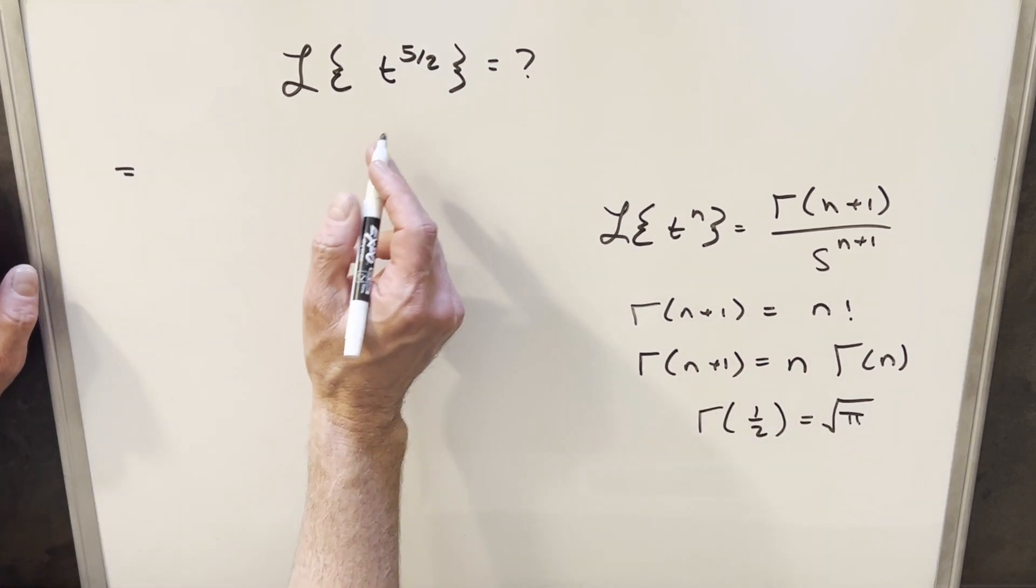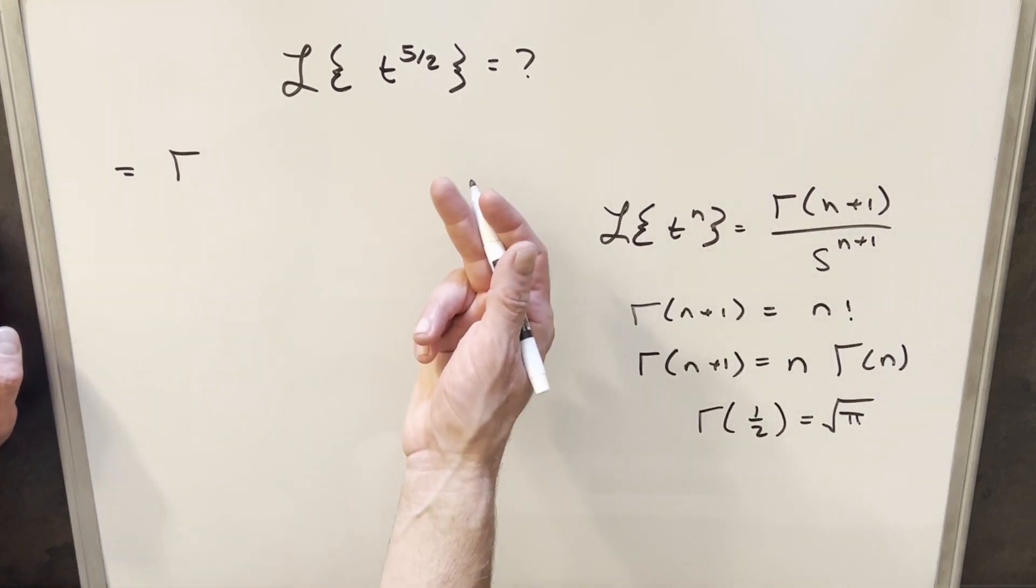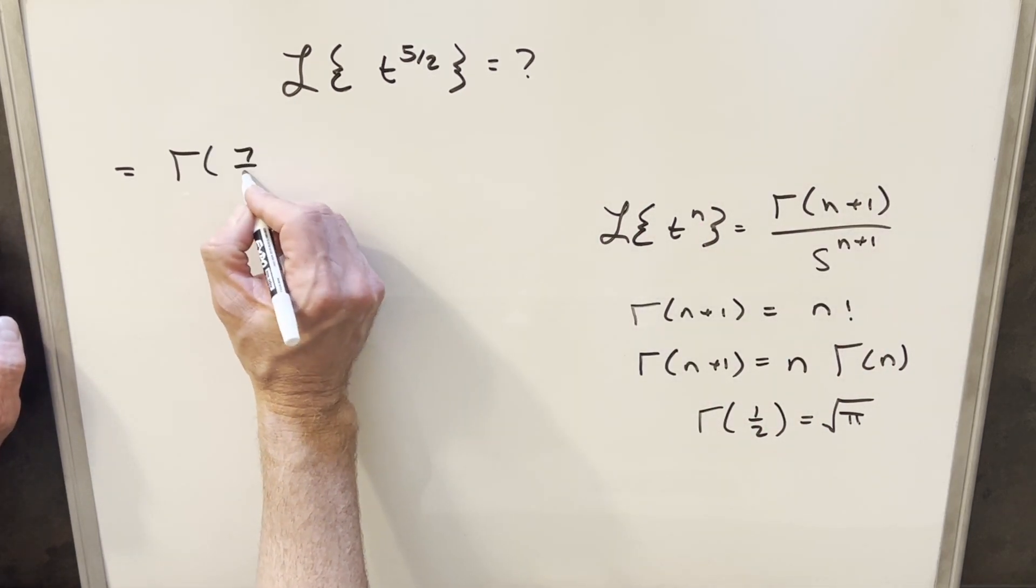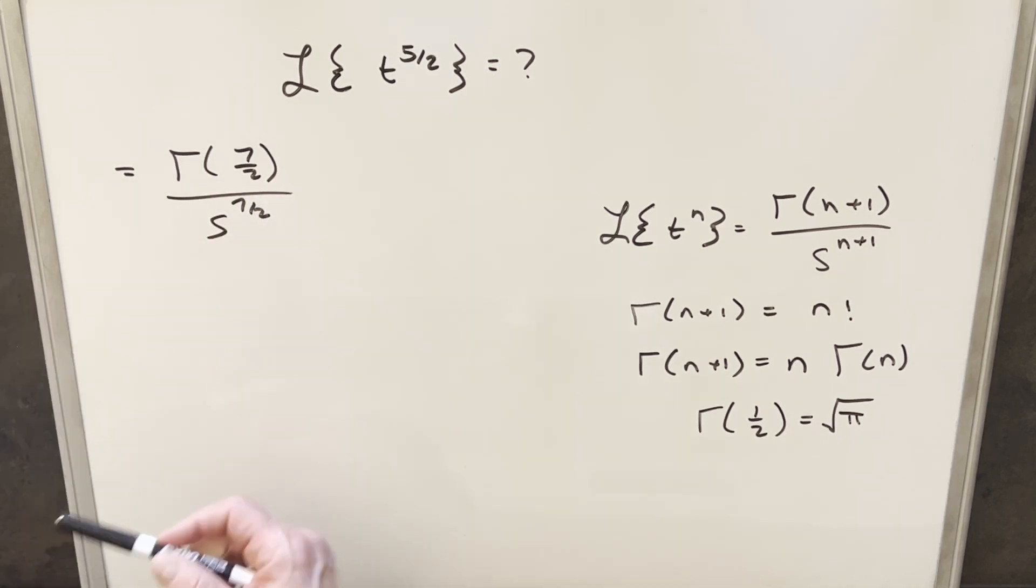So I can write this, our n value is going to be 5 halves. So I can write this as 5 halves plus 1, so that's going to be just 7 halves. And then s to the same value, which is 7 halves.